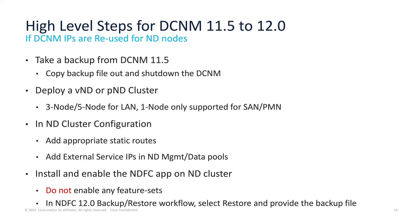Depending on the scale in the fabric, there would be either a deployment of a VND cluster or a PND cluster. We support one node only for SAN and PMN. Again, we recommend looking at the verified scale guide and the compatibility matrix. Once the Nexus Dashboard cluster is brought up, we need to add appropriate routes — there can be proxy, DNS, NTP — and all required configurations in the Nexus Dashboard cluster.